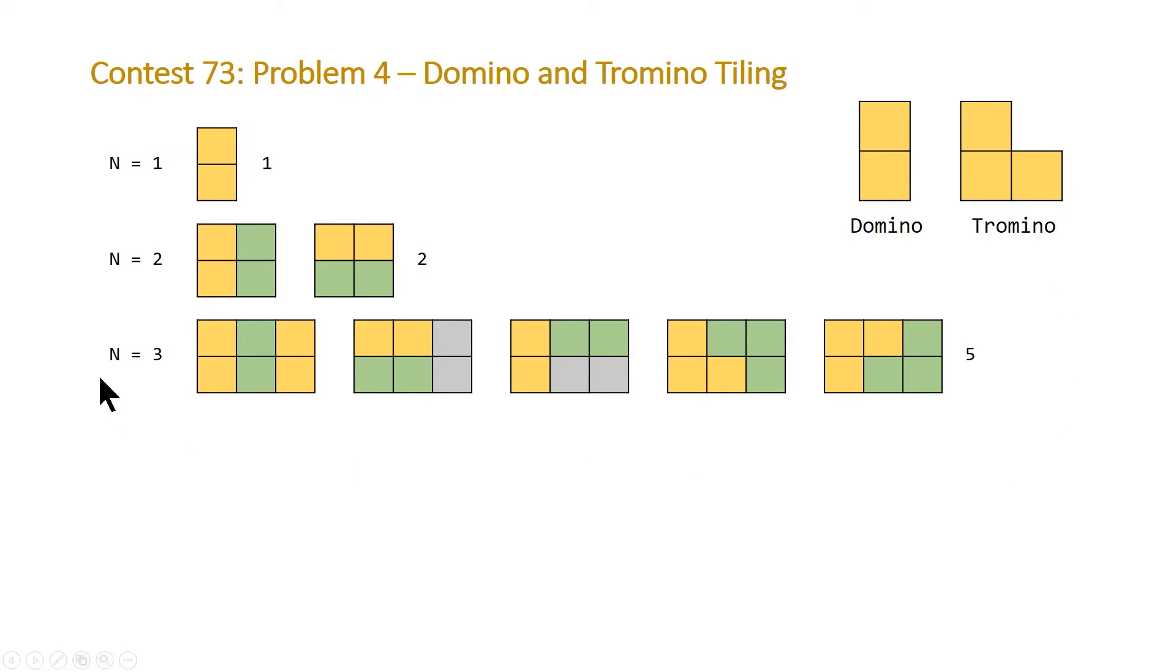And n equals 3 is where things get interesting. So here our solution is 5, and that's driven by three combinations of dominoes and two combinations of trominoes. And what we can notice here is the beginning of our dynamic programming solution.